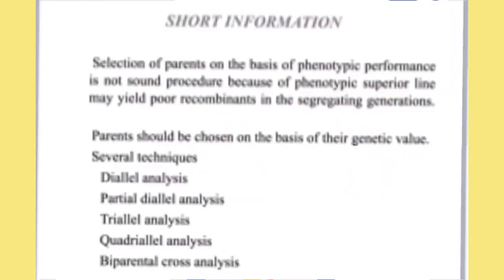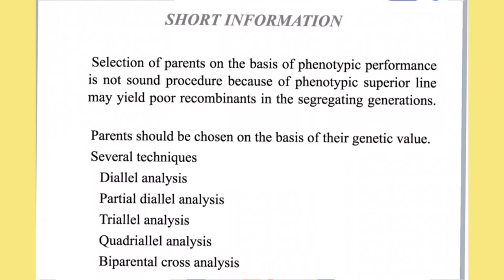Before coming to the point, we all know that the selection of parents on the basis of phenotypic performance is not sound because phenotypically superior lines give poor recombinants in segregating populations. The choice of parents should always be on the basis of their genetic value, and we have several techniques to assess the genetic diversity of parents so that we can choose them for our hybridization program.